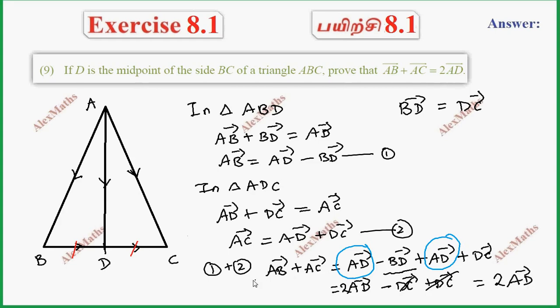So adding 1 and 2, the LHS is AB vector plus AC vector, which equals the RHS, which is 2AD vector.